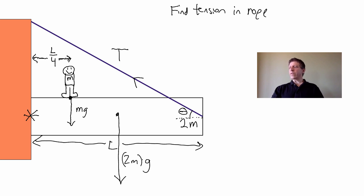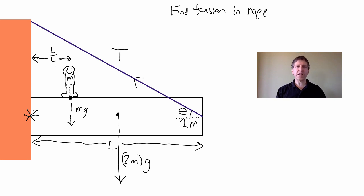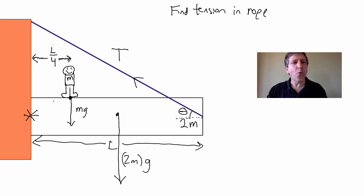Are there any other forces? We've got the force of the person, gravity on the sign, and tension. But there are more forces. If tension is pulling with some component to the left, why isn't the sign accelerating left? It's because there is some force acting at the wall. Some textbooks call that the reaction force, but I just like to call it the force of the wall.